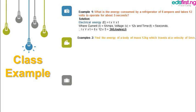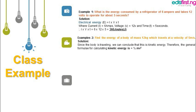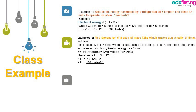The second example: find the energy of a body of mass 12 kg which travels at a velocity of 5 meters per second. Since the body is traveling, we're looking for kinetic energy. The formula for kinetic energy is ½mv². Substituting: m = 12 kg and v = 5 m/s gives us 150 joules as the kinetic energy of that body.